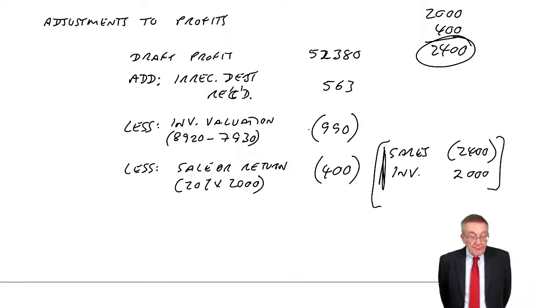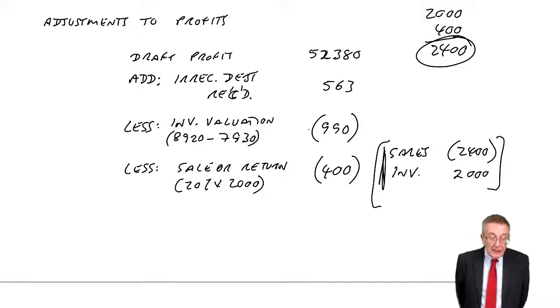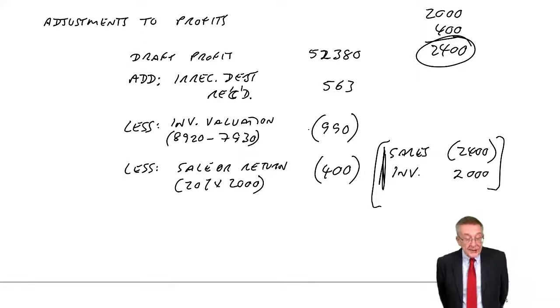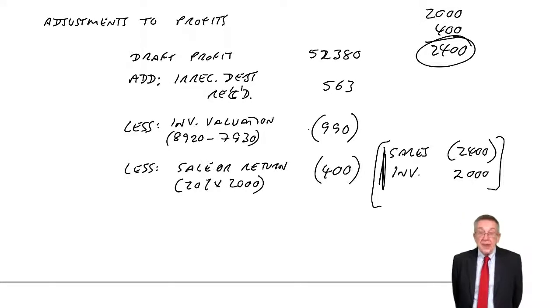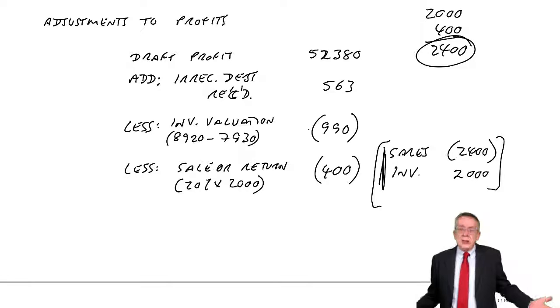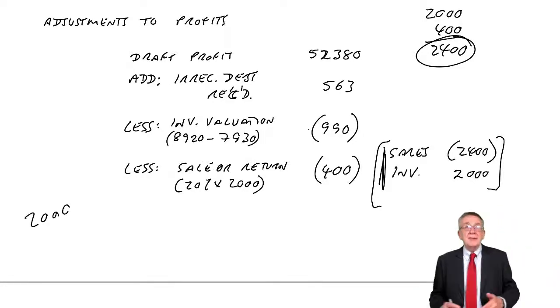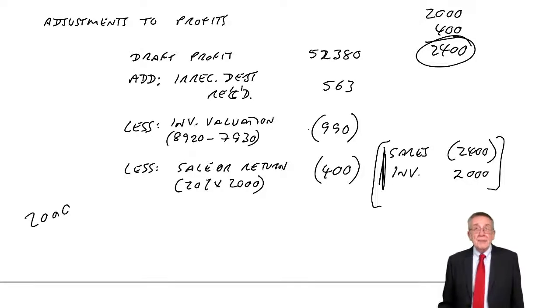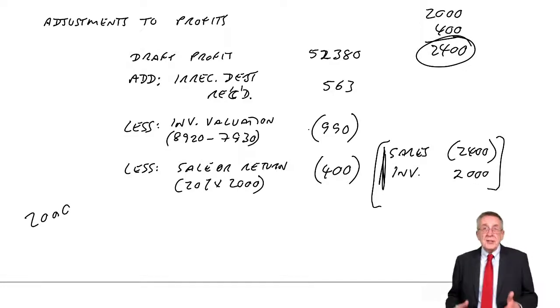Finally, Error D: A payment for rent charged in full to the current year includes $490 which relates to the next accounting period, and no adjustment's been made for this. So what does that mean? We've paid rent this year. I don't know how much we've paid, maybe we've paid $2,000 in total, I'm making up a figure. And we've charged that in full to this year's profit. So we've got an expense for rent of the full $2,000.